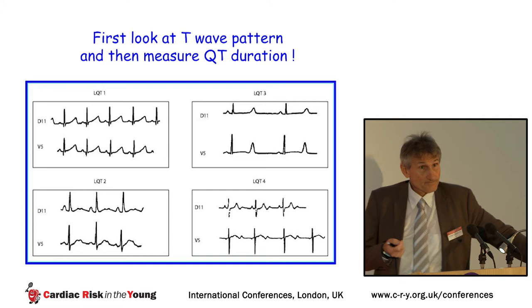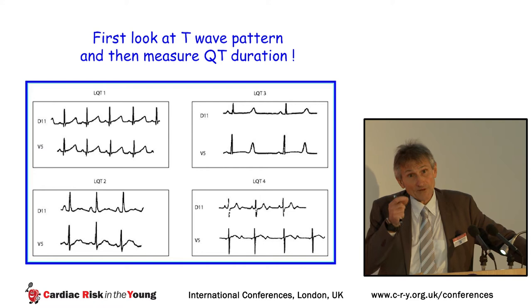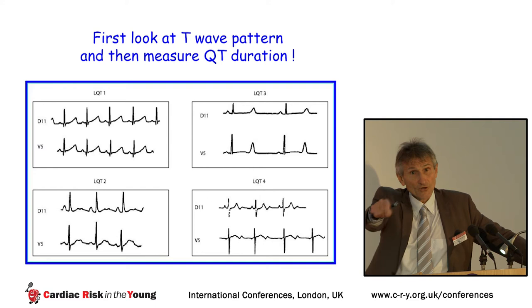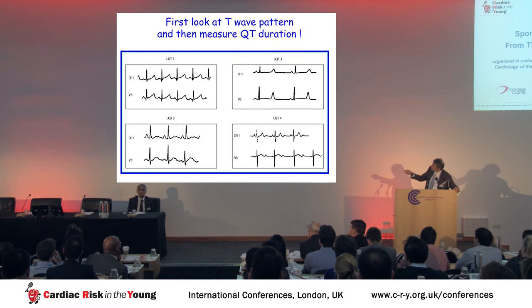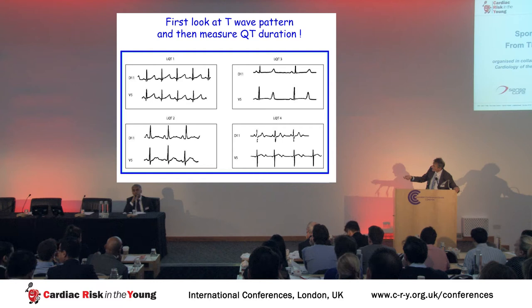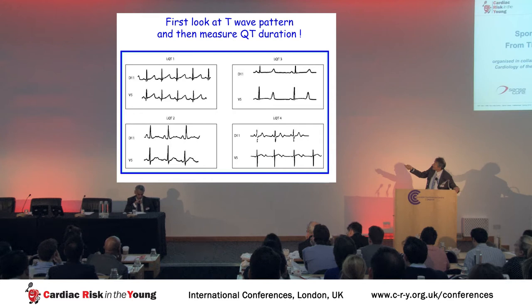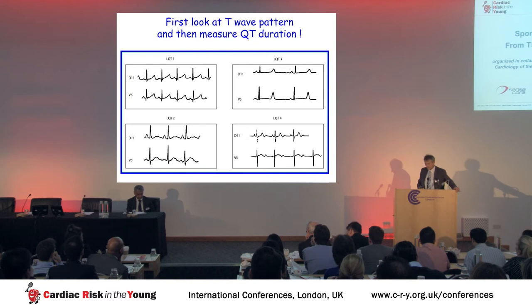When looking at an ECG with abnormal QT duration, we must also examine abnormal T-wave patterns. In long QT1, the T-wave pattern shows a prolonged rise. In long QT2, there is a bifid T-wave. In long QT3, a symmetric T-wave appears late after the QRS. In LQT4, you see a biphasic T-wave pattern — first positive then negative.